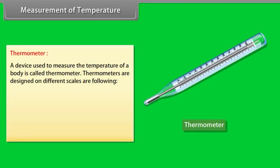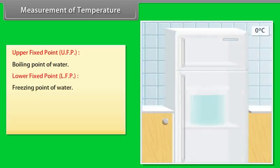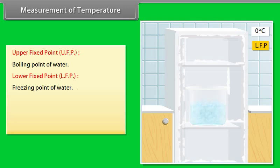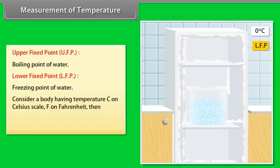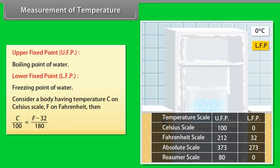Measurement of temperature: A device used to measure the temperature of a body is called a thermometer. Thermometers are designed on different scales: Celsius scale, Fahrenheit scale, Kelvin scale, and Rommel scale. Boiling point of water is known as the upper fixed point. Freezing point of water is known as the lower fixed point. For a body having temperature C on Celsius scale and F on Fahrenheit scale, C upon 100 is equal to F minus 32 upon 180.